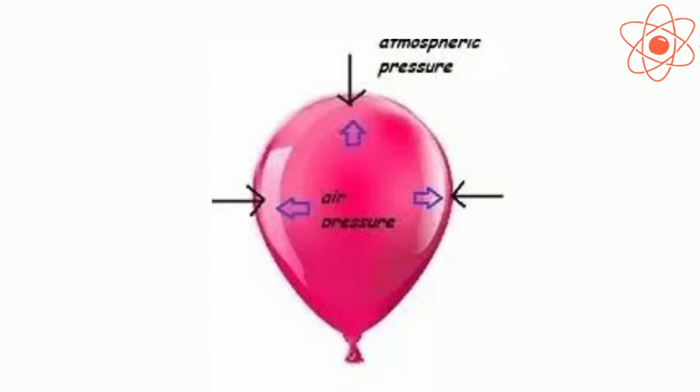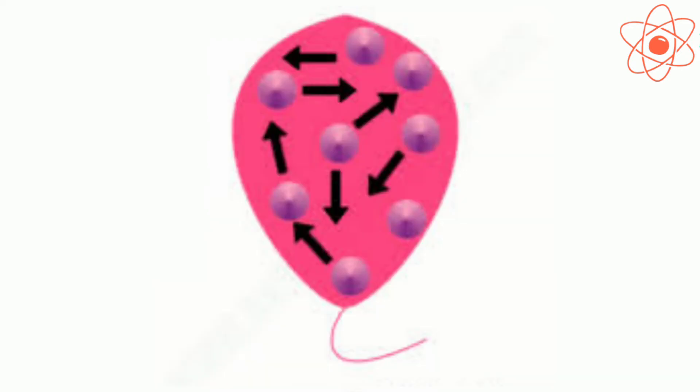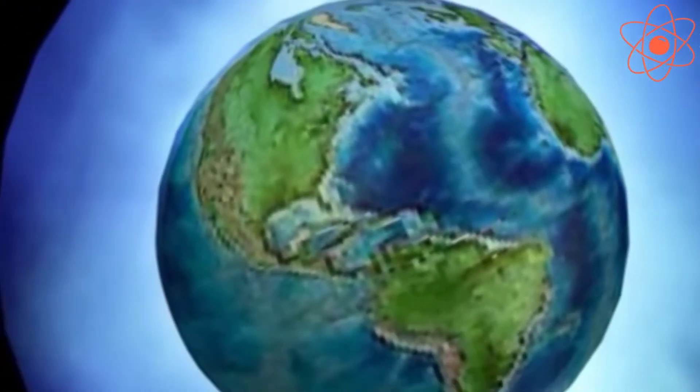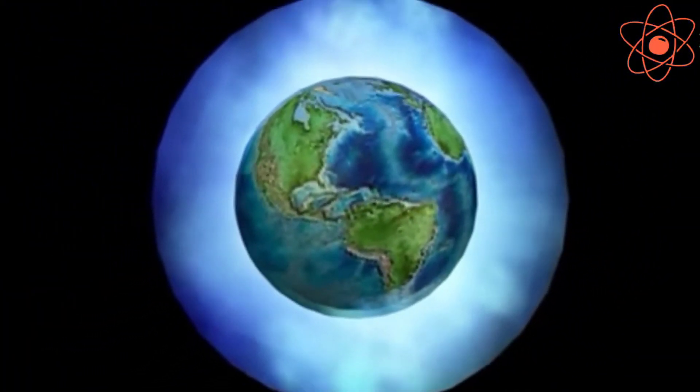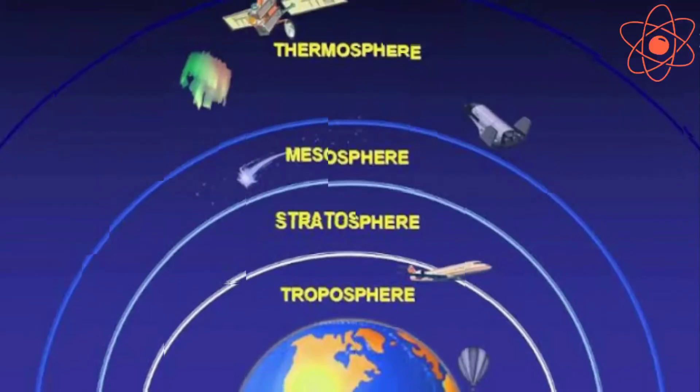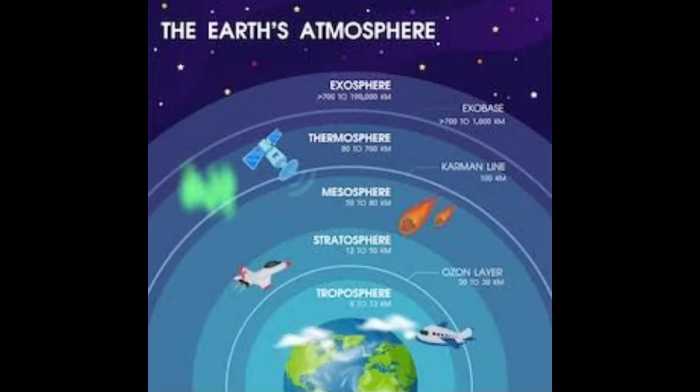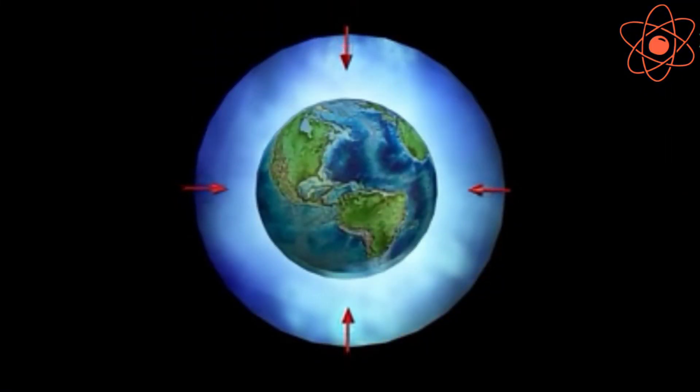As we know that the earth is surrounded by air, the layer of air surrounding our earth is called atmosphere. The atmosphere extends up to several kilometers above the surface of the earth.